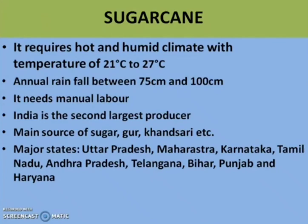Sugarcane requires a hot and humid climate with temperature of 21 degree Celsius to 27 degree Celsius. It needs annual rainfall between 75 centimeters and 100 centimeters. Irrigation is required in low rainfall regions. It needs manual labor from sowing to harvesting because sugarcane crops grow very tall, so more people are required for specialized work. The major states are Uttar Pradesh, Maharashtra, Karnataka, Tamil Nadu, Andhra Pradesh, Telangana, Bihar, Punjab and Haryana. India is the second largest producer of sugarcane after Brazil.